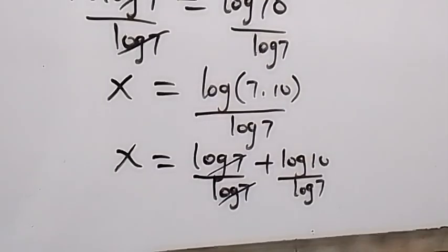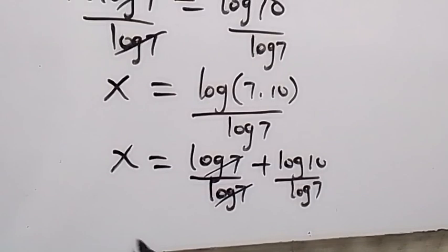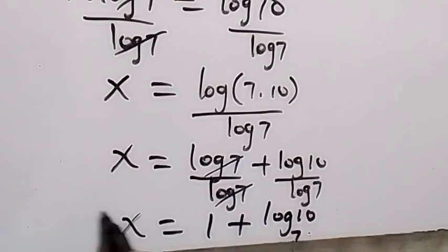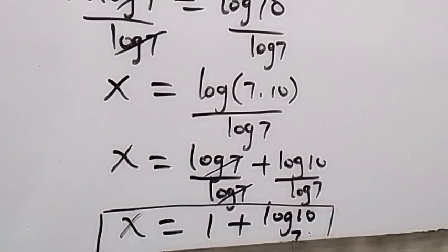So we have one here. So therefore we can still write this as x equals to 1 plus log 10 base 7 from change of base which is equal to the same thing we got in the first approach.